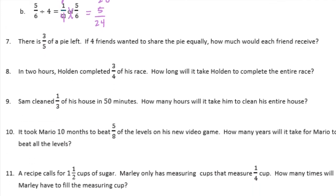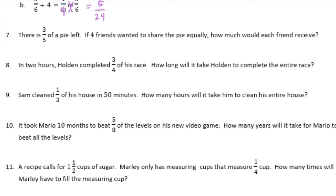Number 7: There is 3 fifths of a pie left. If 4 friends want to share the pie equally, how much would each friend receive? We need to do 3 fifths divided by 4 friends equally. We could change this around to be 3 fifths times 1 fourth, and we would get 3 20ths. So each friend would receive 3 20ths of the pie.